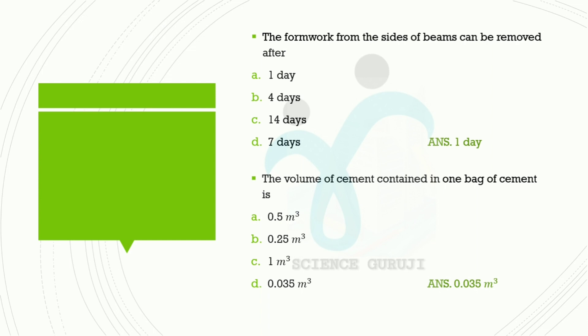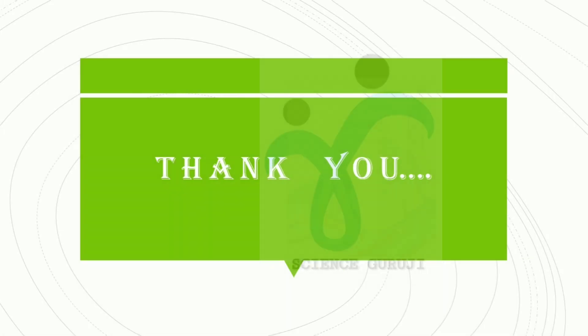The volume of cement contained in one bag of cement is — Option A: 0.5 m³, Option B: 0.25 m³, Option C: 1 m³, Option D: 0.035 m³. Answer: 0.035 m³. With this, I conclude my session. Thank you all and all the best for your exams.